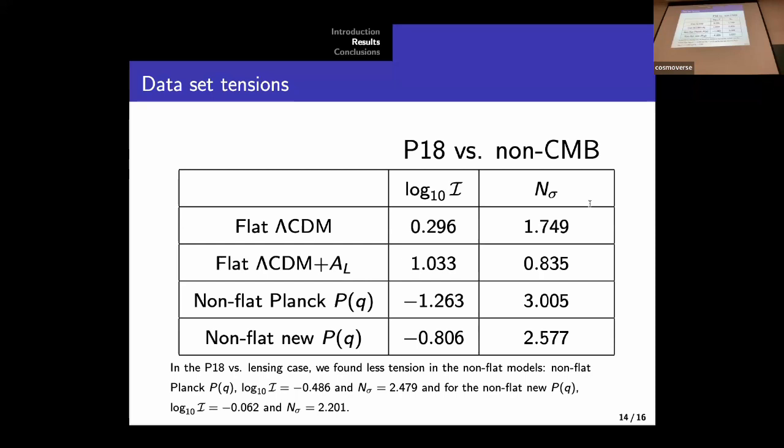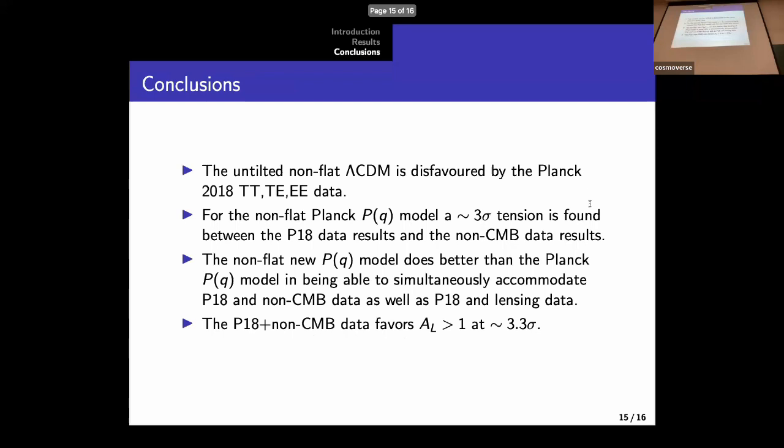So let's just quickly see the two most important cases here. We clearly see that for the Planck power spectrum model, we obtain, according to both estimators, a strong tension between P18 data and non-CMB data. So this tension is still there for the new power spectrum, but it is less severe. And for the lensing, we also obtain tension. So the tension is not so severe as the one in the P18 versus non-CMB data, but we still have 2.5 sigma.